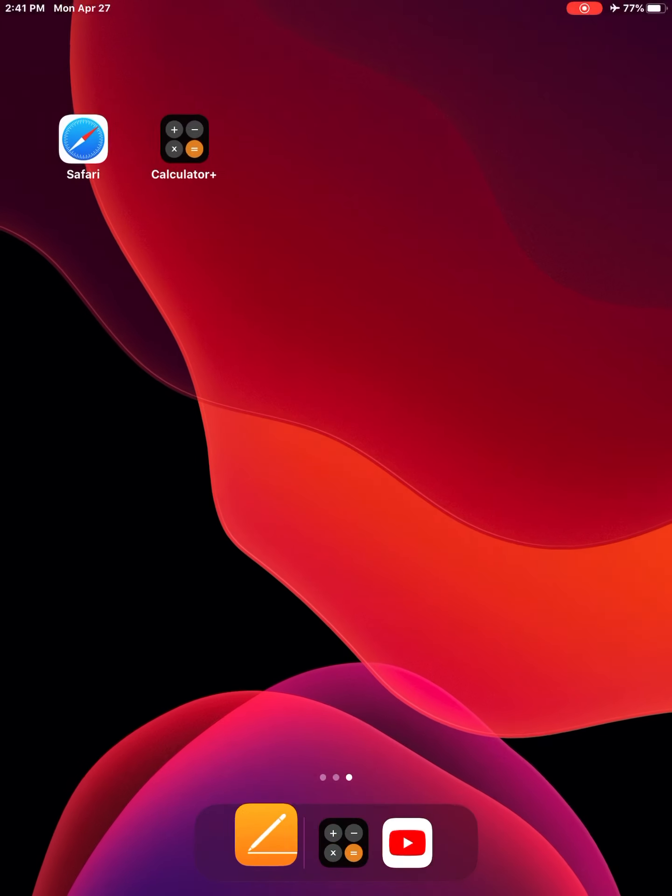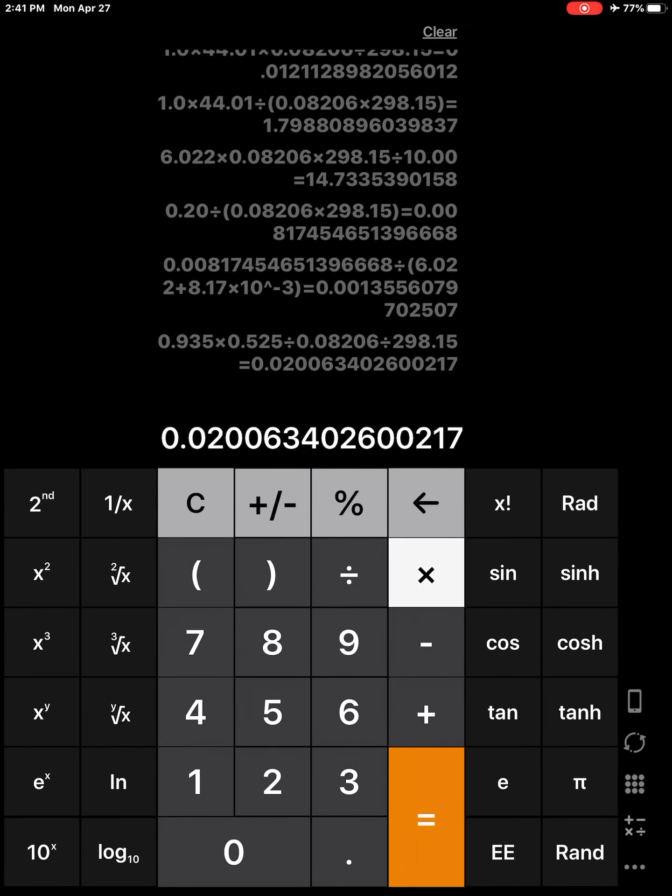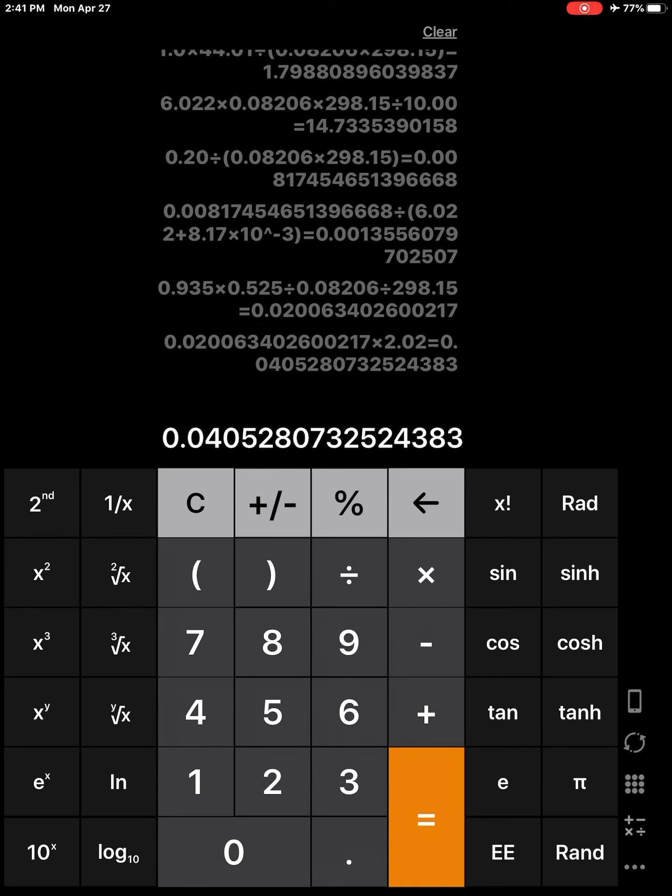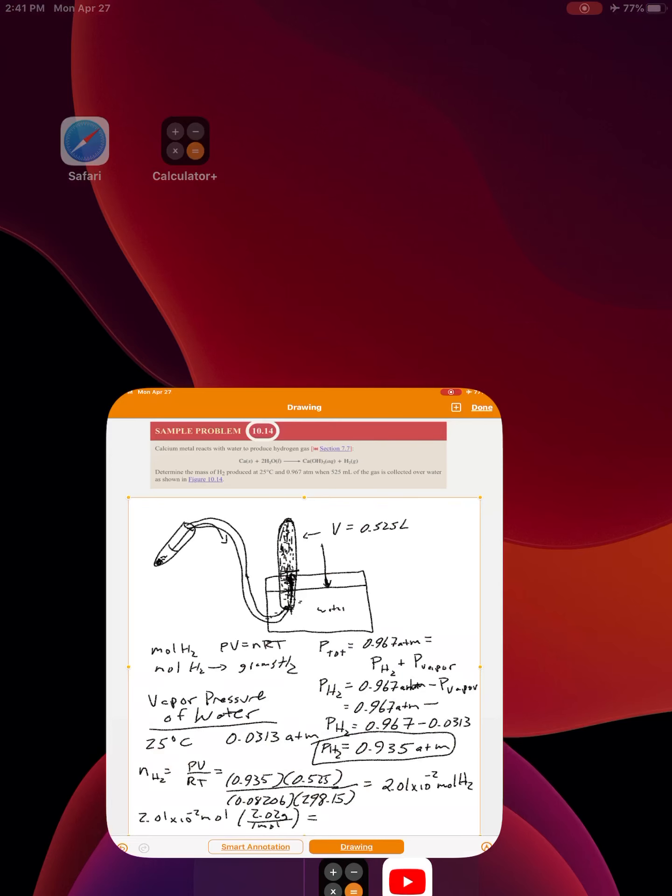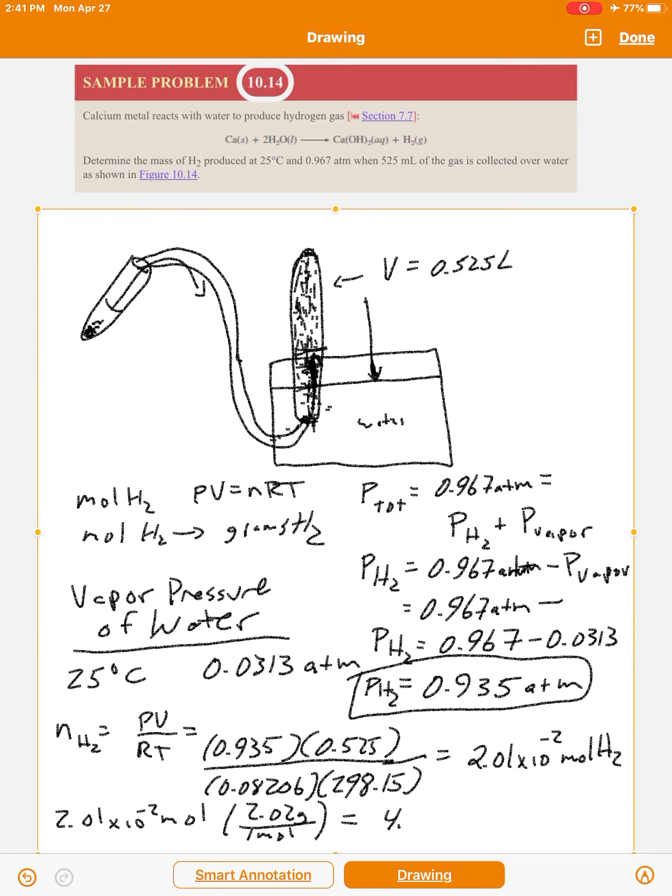So multiply that answer by 2.02, and you get 0.0406. So 4.05 times 10 to the minus 2. And there's your mass.